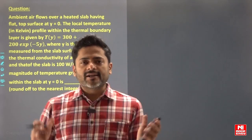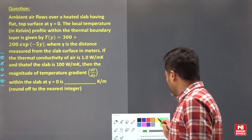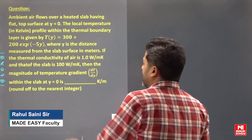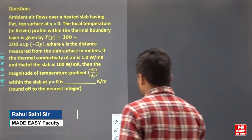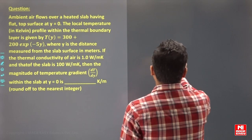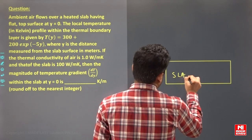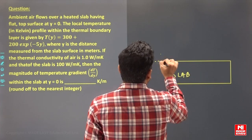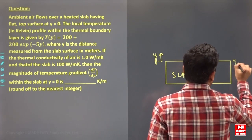Hello dear students, let's see this question from heat transfer. This question is a combined concept of conduction and convection. Ambient air flows over a heated slab having a flat top surface at y equals zero. This is your y direction, and this is y equals zero.